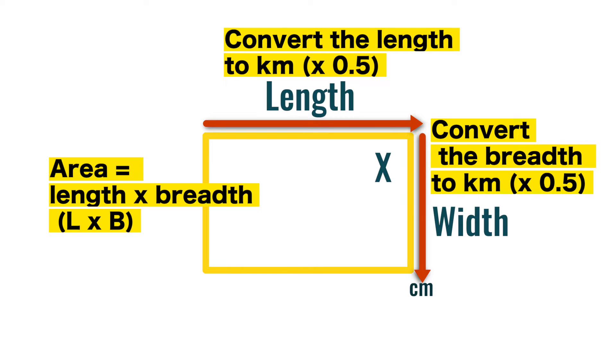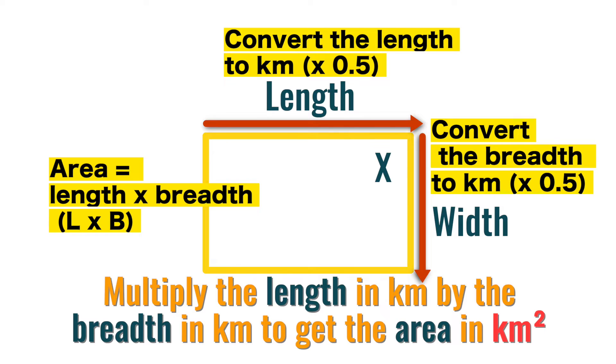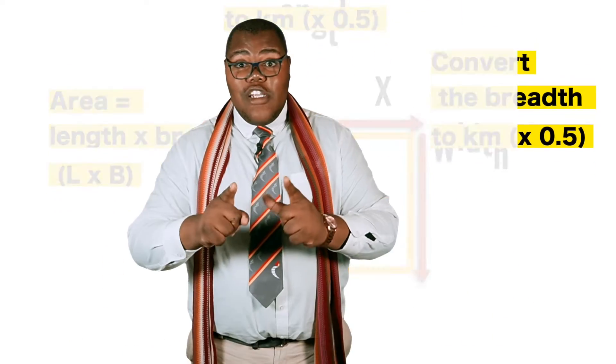After we have our two dimensions in kilometres, so our length in kilometres and breadth in kilometres, we then multiply the length in kilometres by the breadth in kilometres to get the area in kilometres squared. Now learners, it is important to convert each dimension separately from centimetres to kilometres, before multiplying them together.